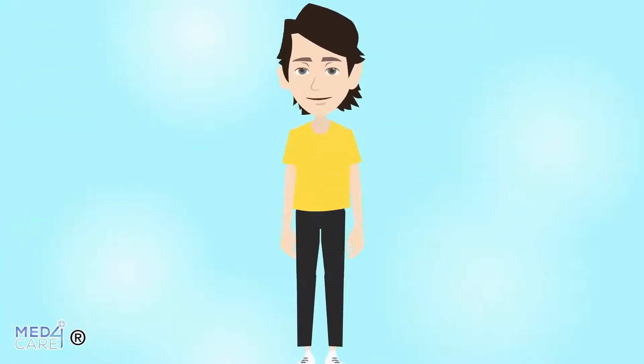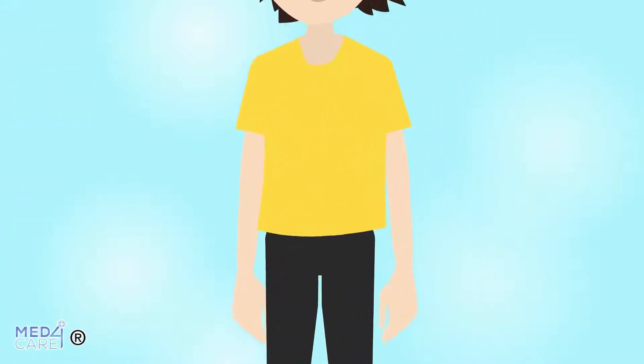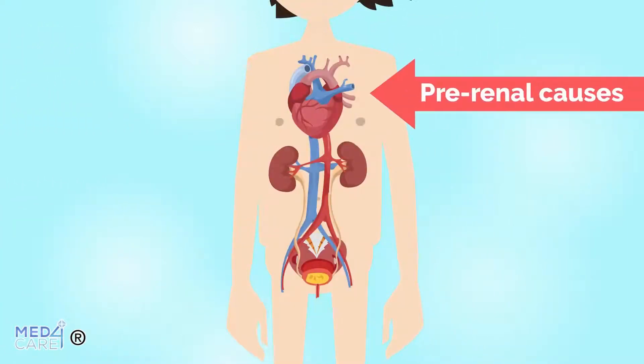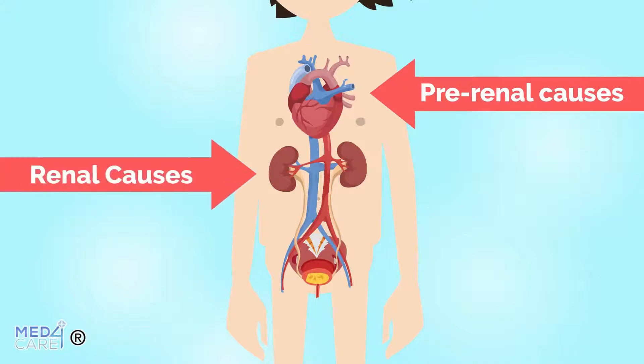In particular, for oliguria three types of causes are to be distinguished: pre-renal, renal, and post-renal.